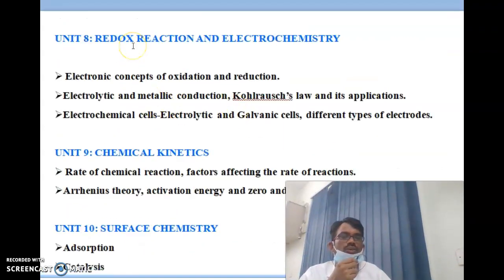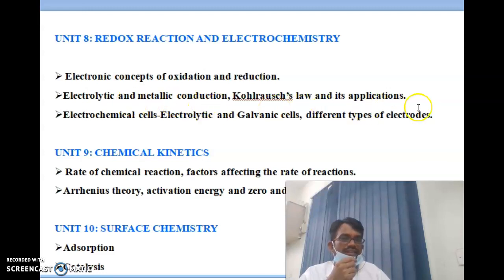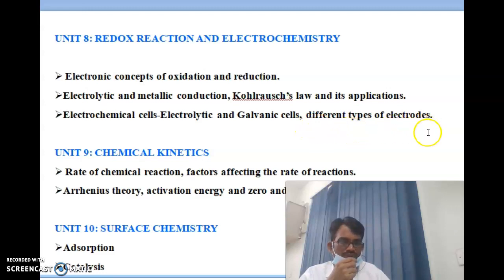Unit 8 is redox reactions and electrochemistry. Subtopics include the electronic concept of oxidation and reduction, electrolytic and metallic conduction, Kohlrausch's law and its applications, electrochemical cells — both electrolytic and galvanic — and different types of electrodes.